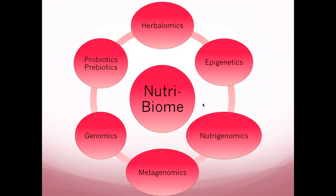We know the major influence the microbiome is having on our bodies, our development, our immune system, and in particular our GI tract immune system. Most people now know that the vast majority of your immune system lies in the gut area — the GALT. The gut becomes the second brain, and all these other influences — herbalomics, probiotics, prebiotics, genomics, metagenomics, nutrigenomics, epigenetics — can now all be tied to our health through the Neutrobiome.